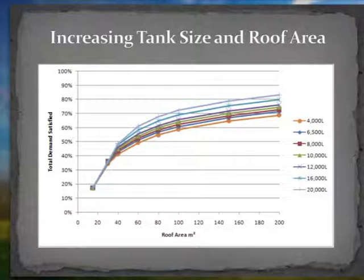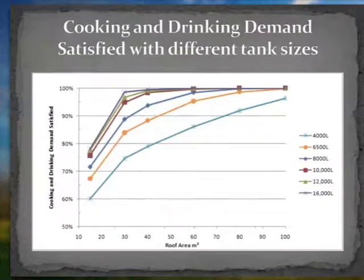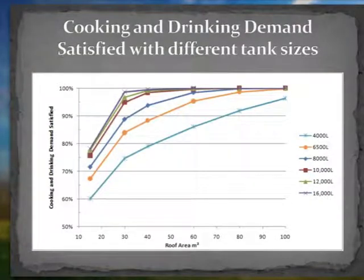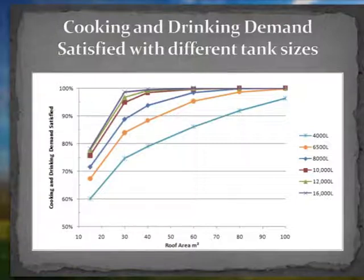This graph shows the cooking and drinking demand satisfied in an average rainfall year with different sized tanks. Ensuring the roof area is at least 30 metres squared, at least 85% of a household's cooking and drinking demand can be satisfied with a 6,500 litre tank.